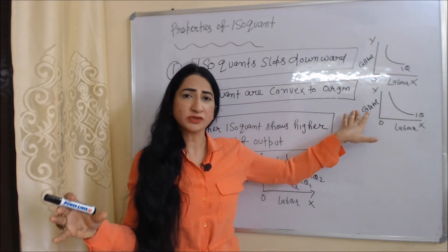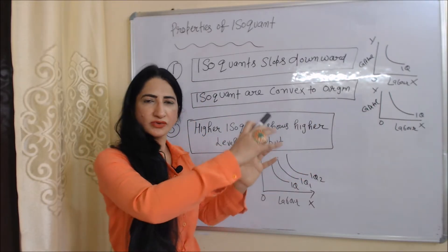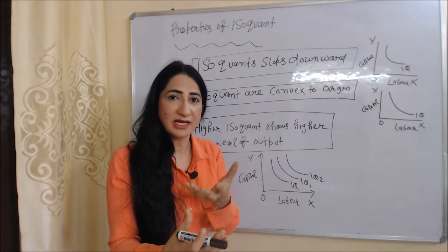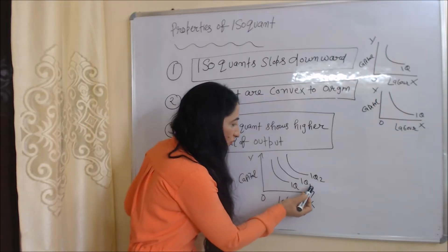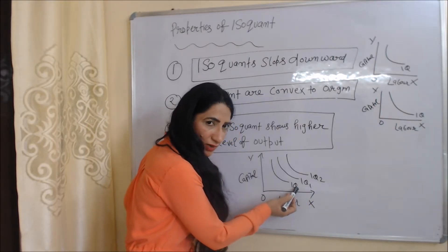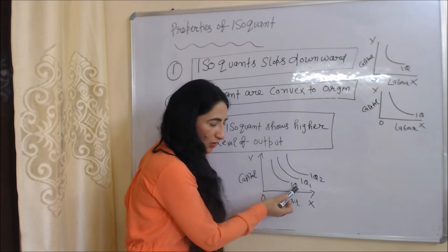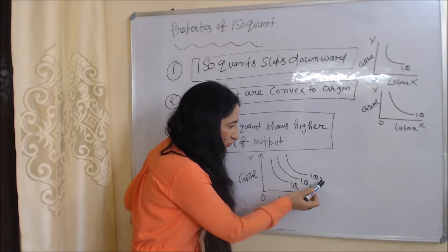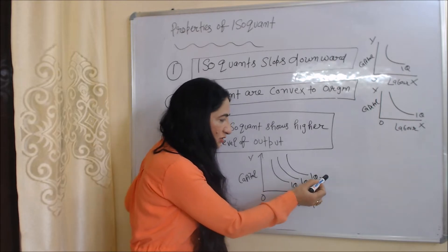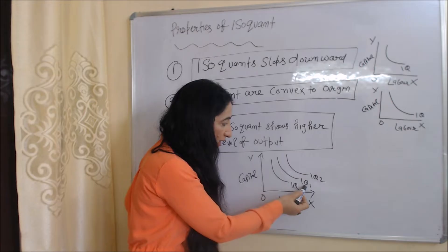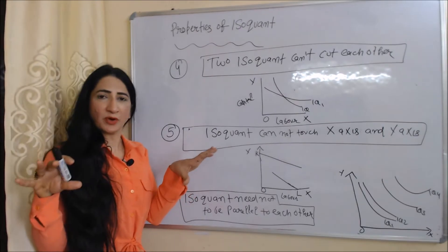The next property is that a higher isoquant shows a higher level of output. In this diagram, you can see IQ1 is higher than IQ, so IQ1 shows more output compared to IQ. Similarly, IQ2 is higher than IQ1, so IQ2 shows more output compared to IQ1, because higher isoquant means more output.